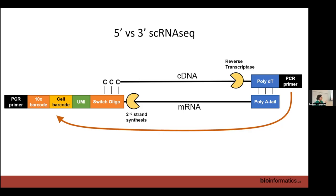For TCR and BCR analysis you have to do five-prime sequencing, because that's where the variable section is. If you do three-prime sequencing you can still see the constant portion of your TCRs and BCRs, but you cannot see the variable portion because that's at the five-prime end of the gene.